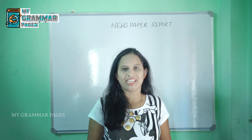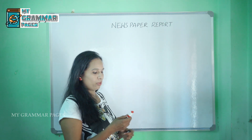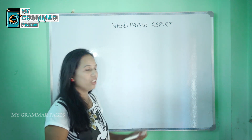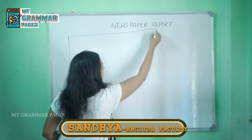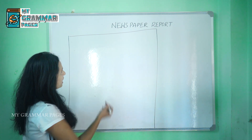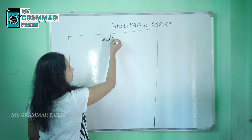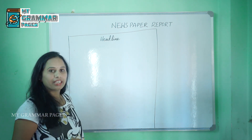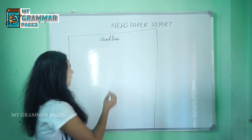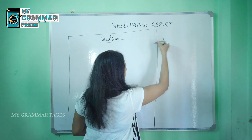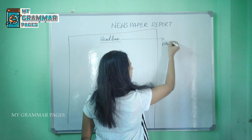Now let's shed some light on learning the newspaper report. A newspaper report consists of a format. First of all, we need to open a three-sided box. Here comes the headline. This headline gives the main idea of the whole news being reported, and it should be brief and catchy.